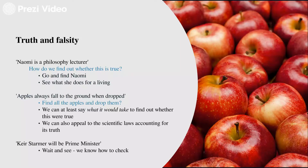Take a sentence like 'Keir Starmer will be Prime Minister.' It doesn't look as though we can just check whether Keir Starmer is Prime Minister right now, because this is a sentence about the future. But we seem to know what it would take to find out whether the sentence is true or false — we just need to wait long enough to see whether Keir Starmer becomes Prime Minister before he dies. And that would be a way to check whether that sentence is true or false.